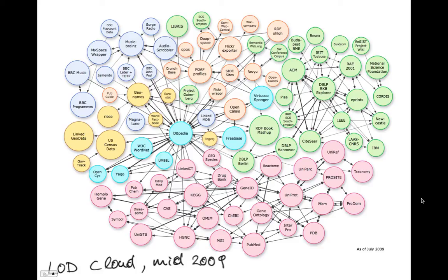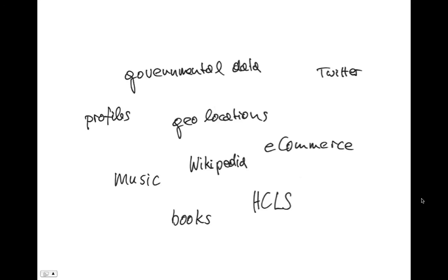Linked data — that's the linked open data cloud in mid-2009. Hundreds of datasets, billions of data items interlinked with hundreds of millions of so-called typed links. We've got a lot of different data in there: governmental data, geolocation data, music, books, social profiles, e-commerce, healthcare and life science stuff. We can have Twitter, Delicious, whatever.